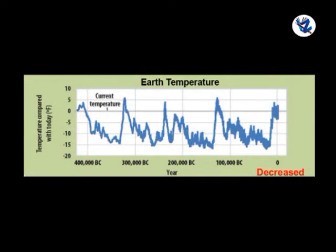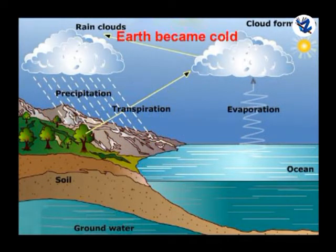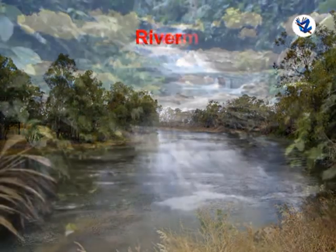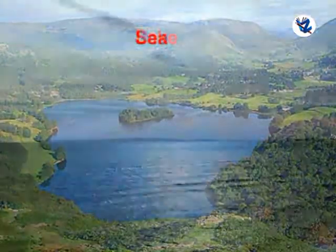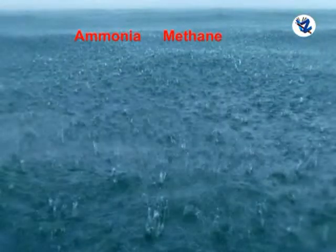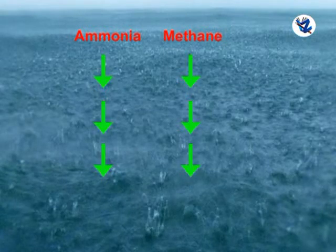As years passed, the temperature of the Earth decreased. Steam condensed into water which resulted in rain and the Earth became cold. Water gradually accumulated and this led to the formation of rivers, streams, lakes, seas and oceans. Compounds like ammonia and methane were dissolved in rain and water and accumulated in the sea.